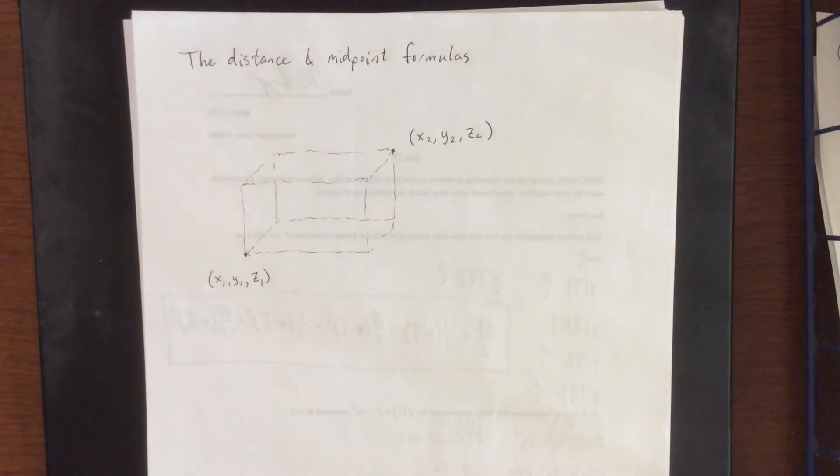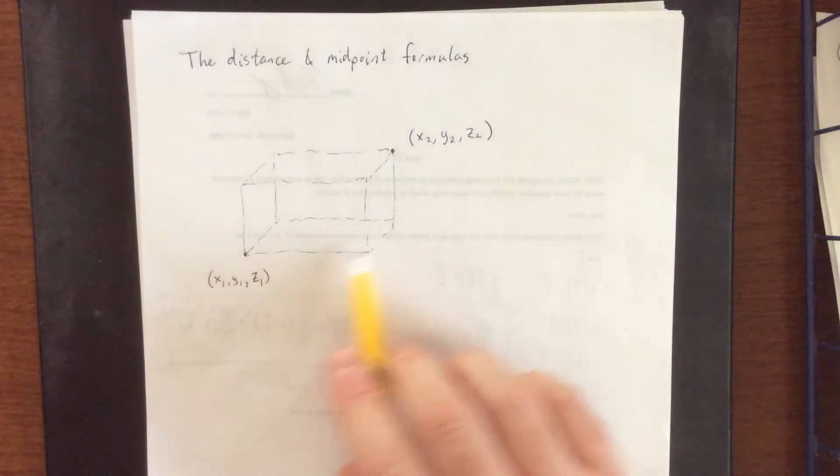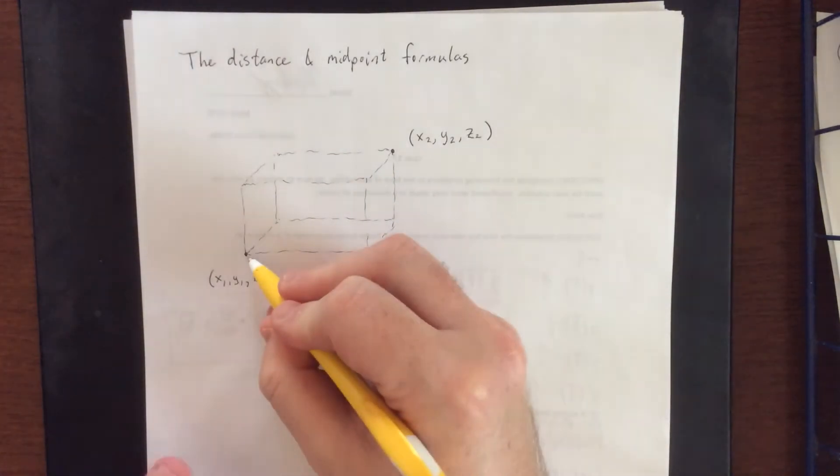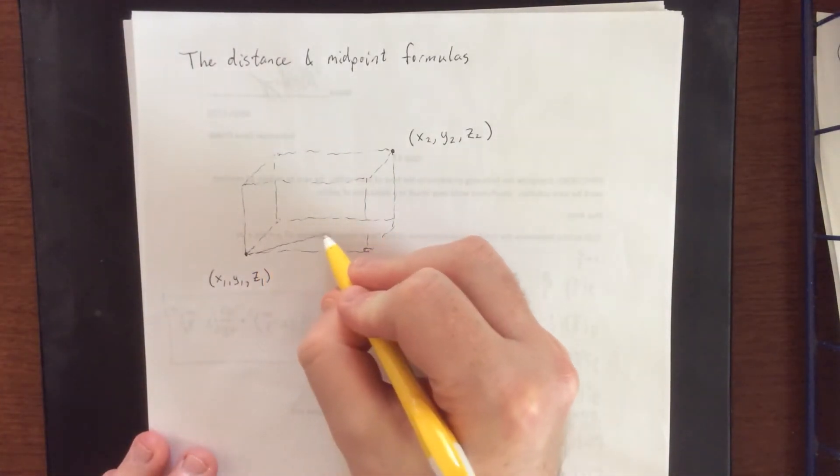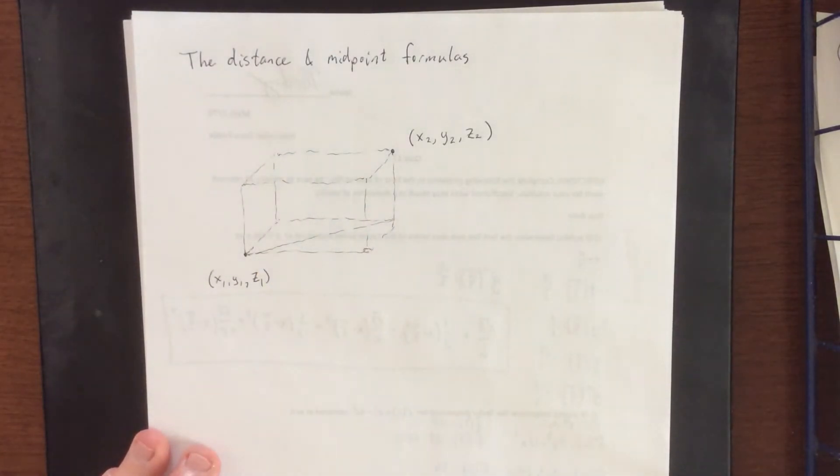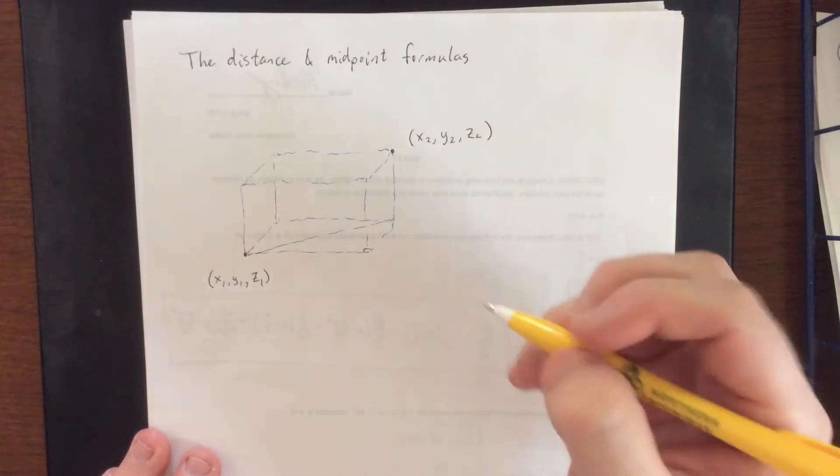Now the idea behind the distance formula is that when you're working in two dimensions, if you have two sides that are perpendicular to each other, then the distance that connects them diagonally is going to be like the hypotenuse of a right triangle. Given that it's the hypotenuse of a right triangle, what you can do with this...